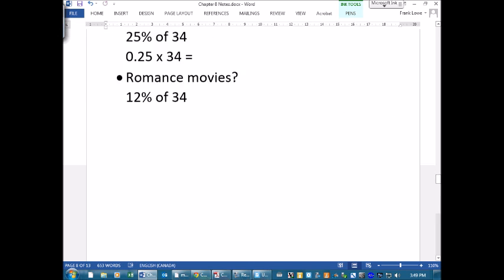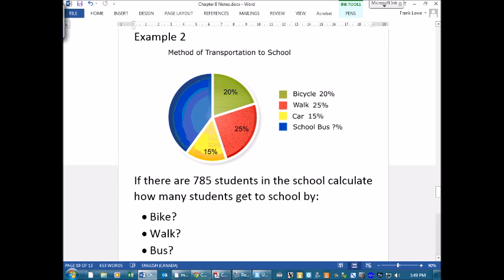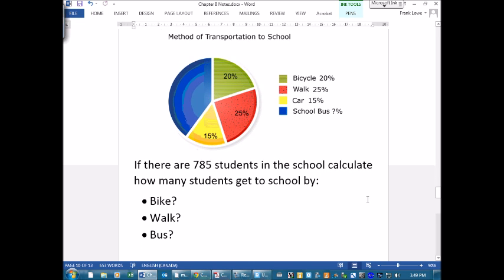These are the ones we just looked at, so let's carry on. I want you to take a peek at this example. Method of transportation to and from school. So we've got some basic information here. We've got 20% of people are riding the bike, we've got 25% of people are walking, 15% are driving their cars.